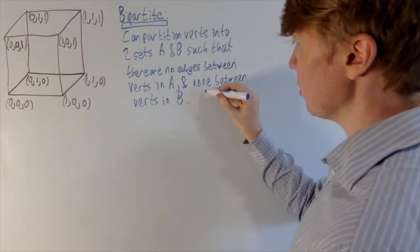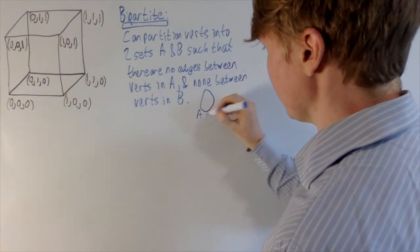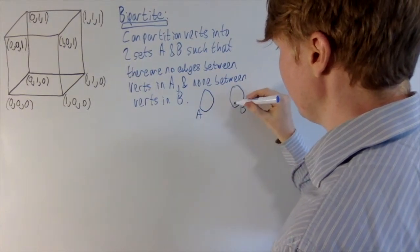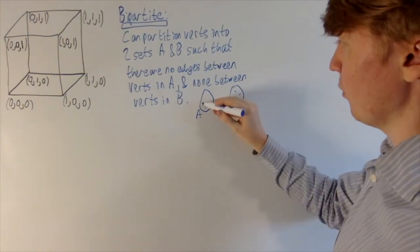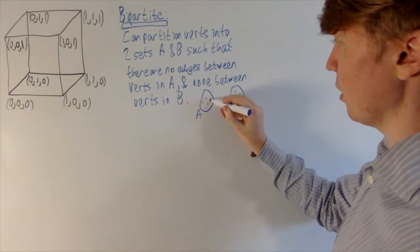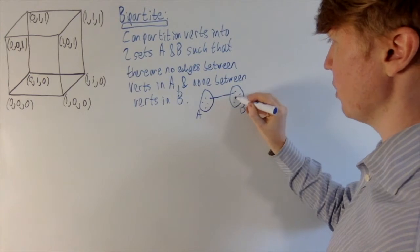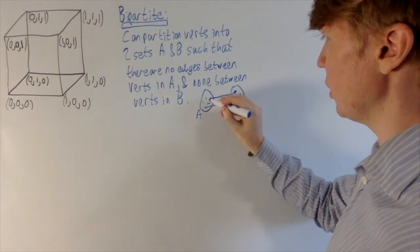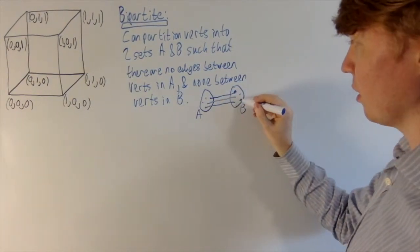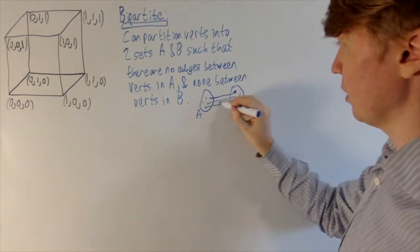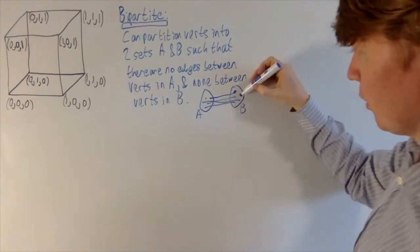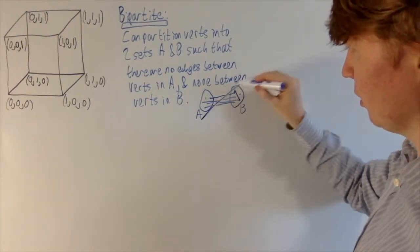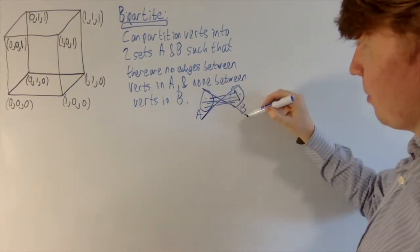The general picture is: you've got your set A and set B, you have some vertices in each, and you're allowed to have edges going between A and B, but none within A and none within B. So for example, if I include an edge within one set, it's no longer bipartite.